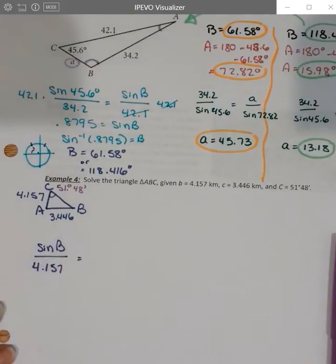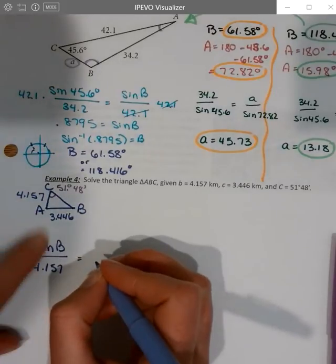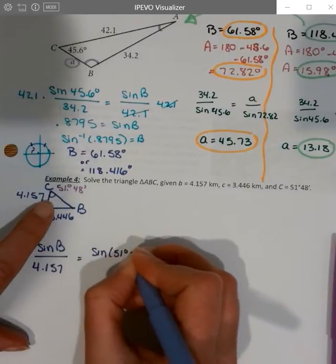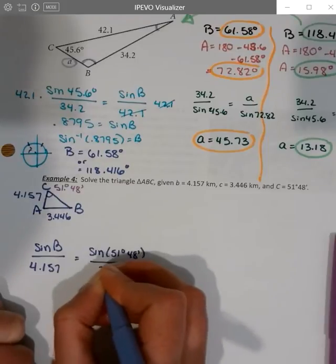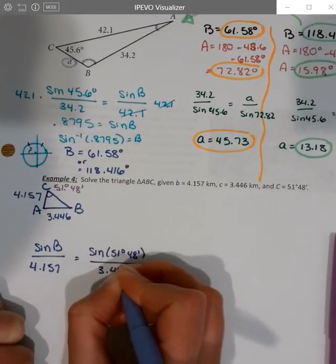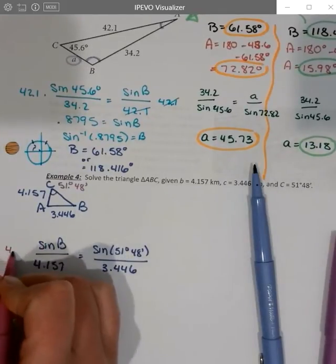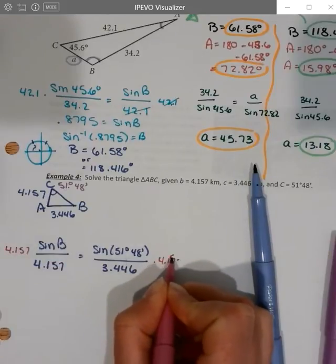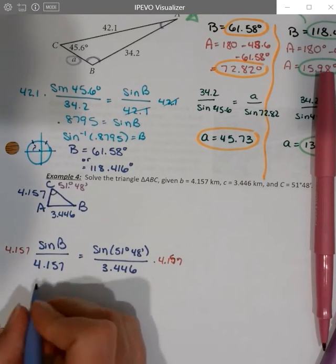That's equal to the sine of C, so sine of 51 degrees, 48 minutes, over sine C, 3.446. Now if I multiply that over, I can multiply both sides by 4.157. Then I can just type that all in and get the ratio for sine B.